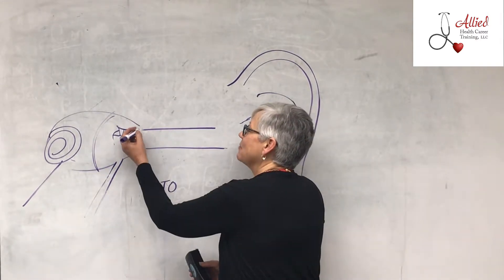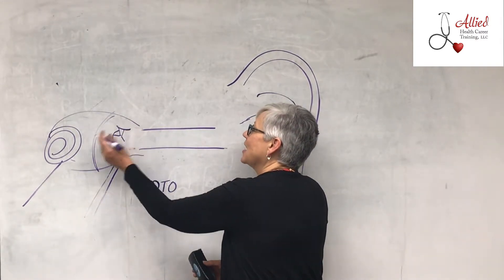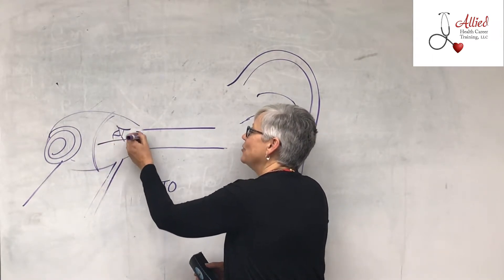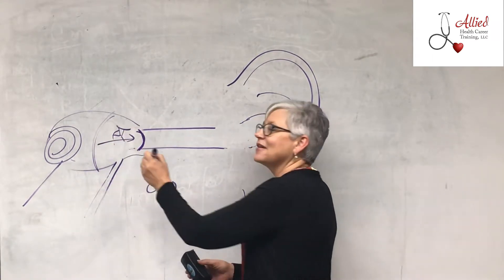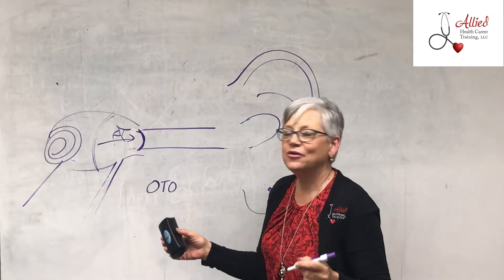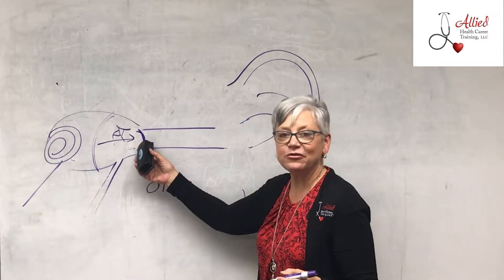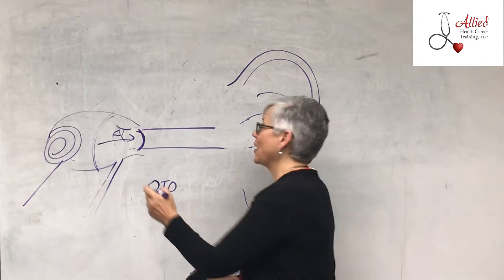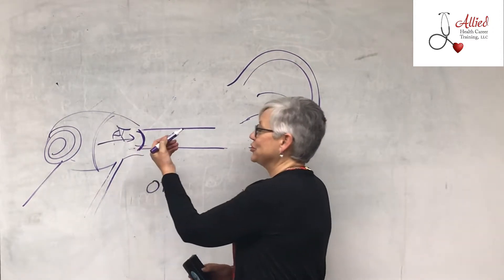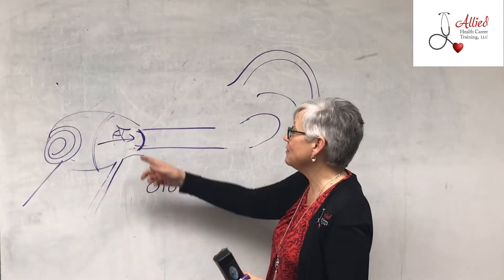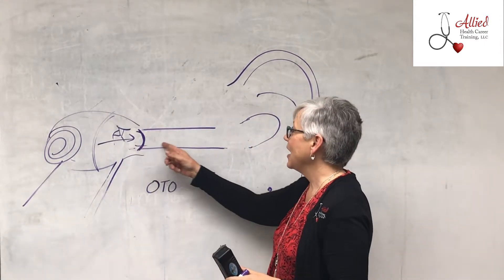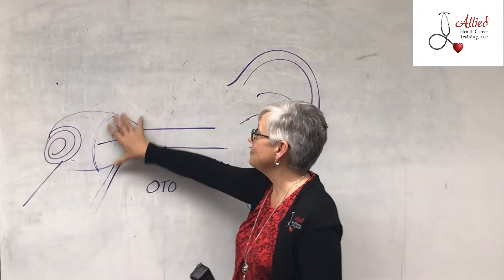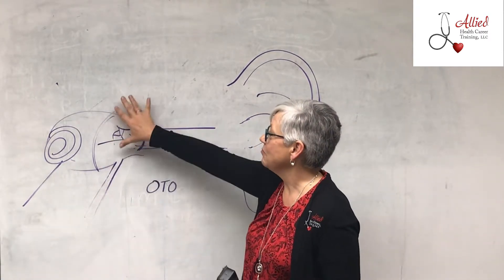That causes fluid to back up and get inflamed and infected. When that happens, all this extra fluid pushes up against the tympanic membrane — you may have had a doctor say 'you have a bulging eardrum,' and that's what happens. If it goes too much, it bursts — you get a little tear in it and some infection will come out. This is otitis media, a middle ear infection.